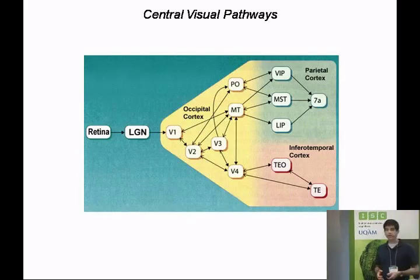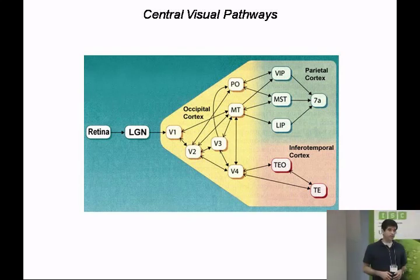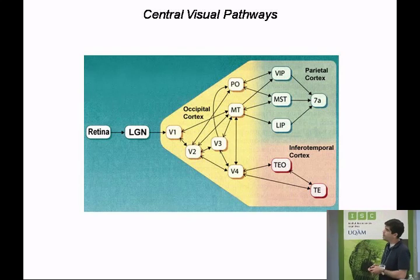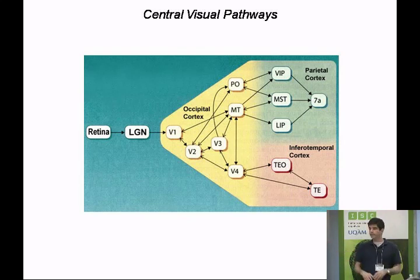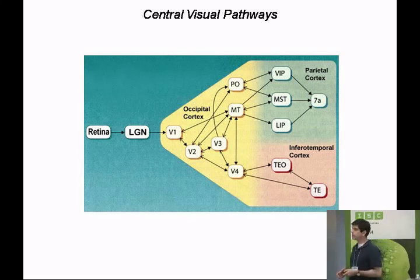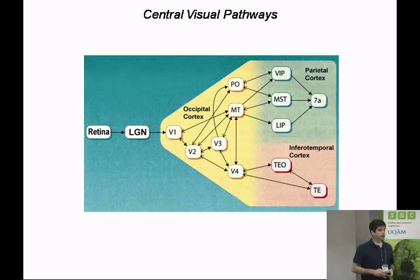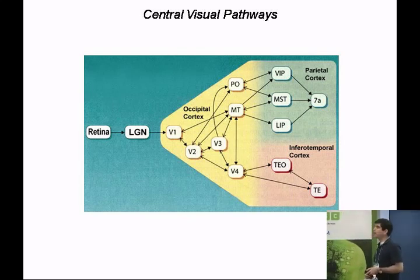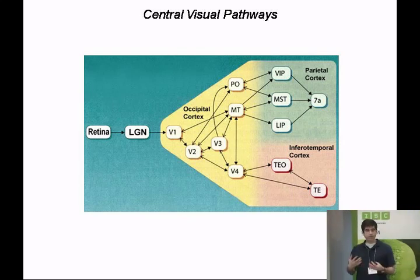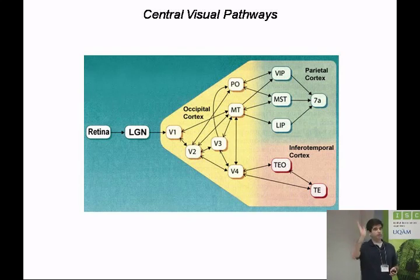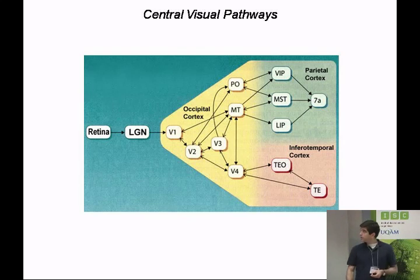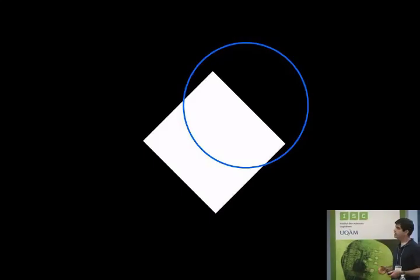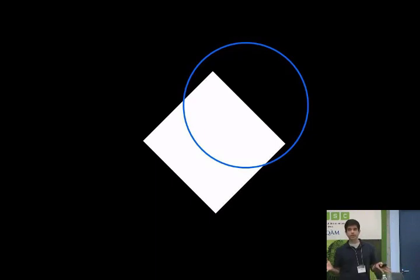We recorded from MT neurons in an awake monkey just looking at the screen — no behavior, just staring. We placed a stimulus like the diamond in the receptive field of each neuron. The question is: does the neuron encode the V1 answer — the wrong answer with a vertical component — or does it get the right answer? We thought MT might get the right answer because each MT neuron has a much larger receptive field, integrating outputs of many V1 neurons tiled across space.